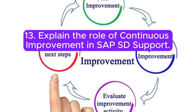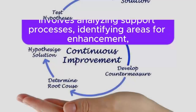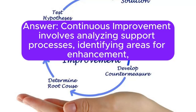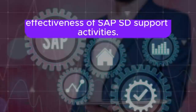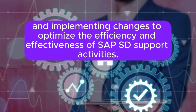Question 13: Explain the role of continuous improvement in SAP SD support. Answer: Continuous improvement involves analyzing support processes, identifying areas for enhancement, and implementing changes to optimize the efficiency and effectiveness of SAP SD support activities.